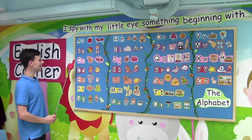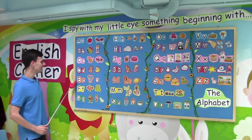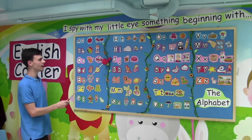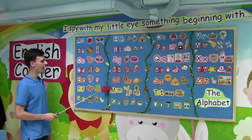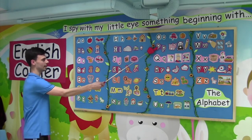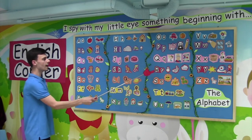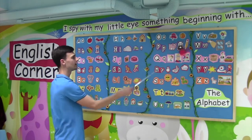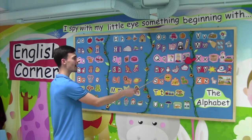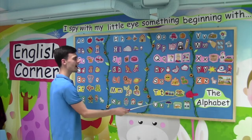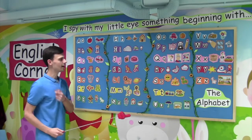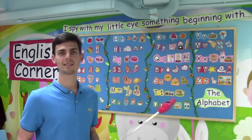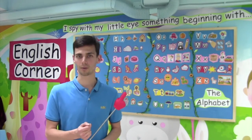A, B, C, D, E, F, G, H, I, J, K, L, M, N, O, P, Q, R, S, T, U, V, W, X, Y, and Z. Now I know my ABCs. Next time won't you sing with me?